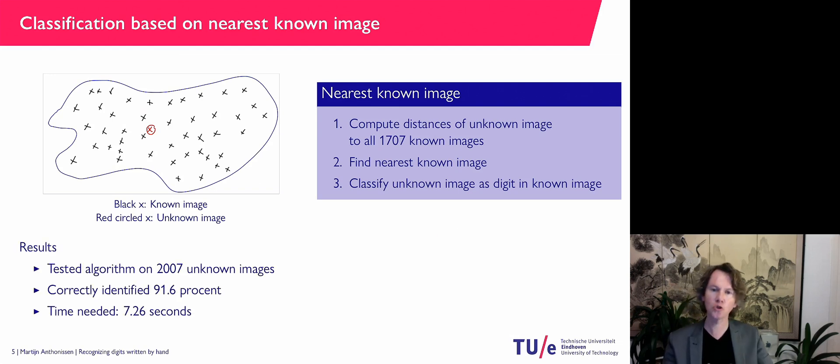Apart from the training set, I also have 2007 unknown images. In principle, unknown image. I'm going to treat them as unknown. But I do know the digit that's in there. So I can test my algorithm.